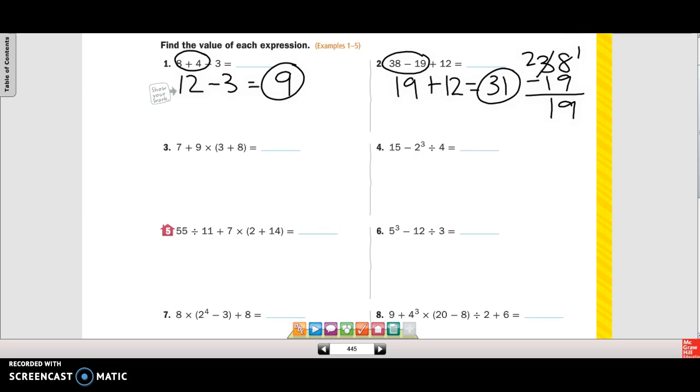Okay, we do have parentheses in this one, so we're going to start there. Let's rewrite our problem. 3 plus 8 is 11. Next, what comes first is multiplication. So 7 plus 99 equals 106.